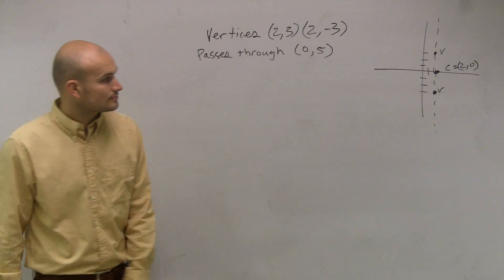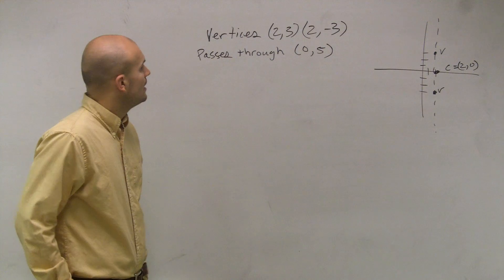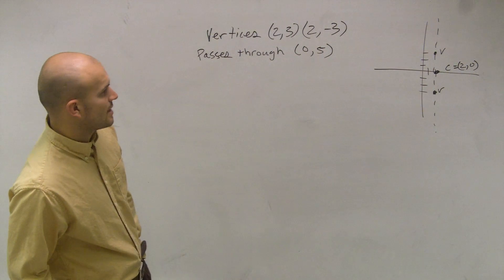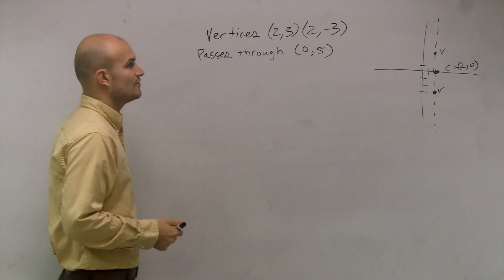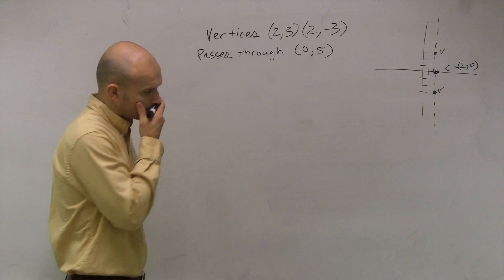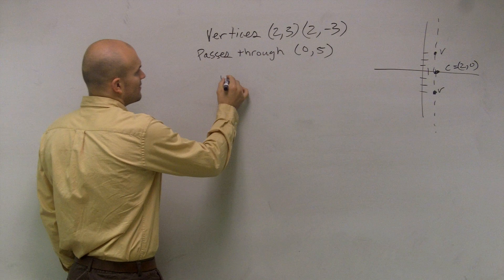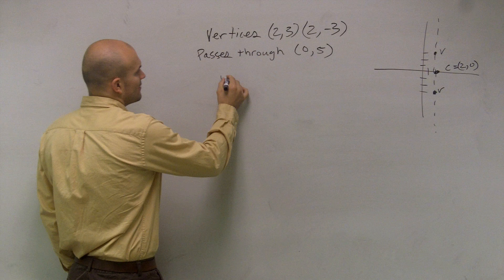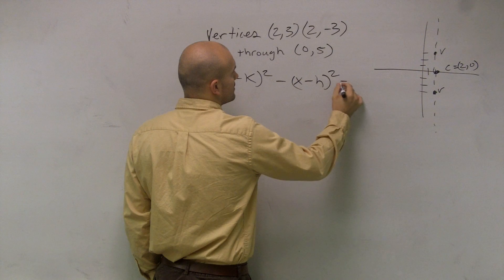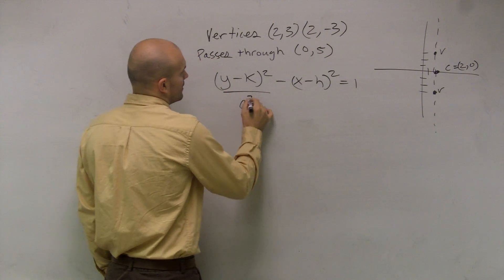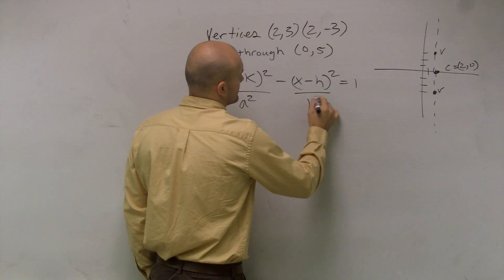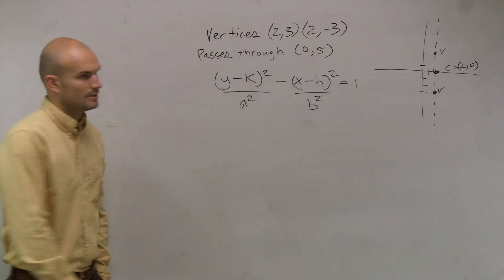Now the one thing, and then obviously we know it passes through (0,5). So since this is a vertical, we know that when it equals 1 all over a squared over b squared.